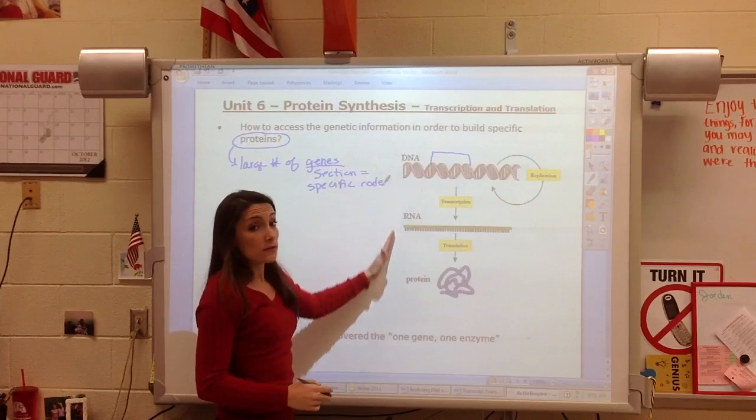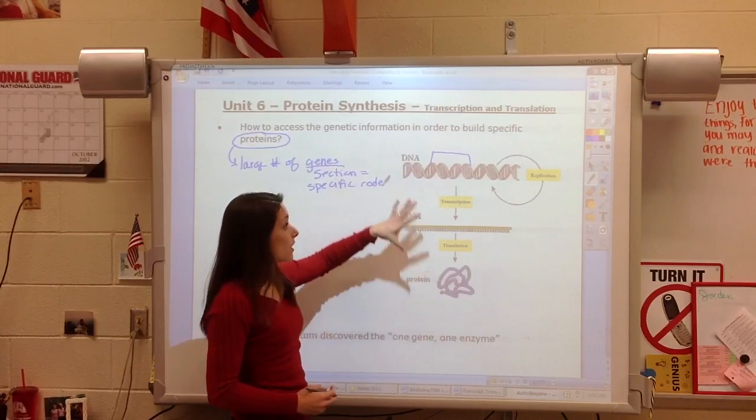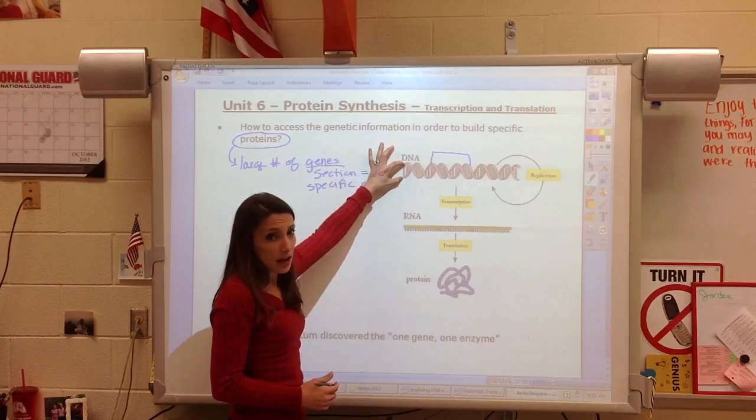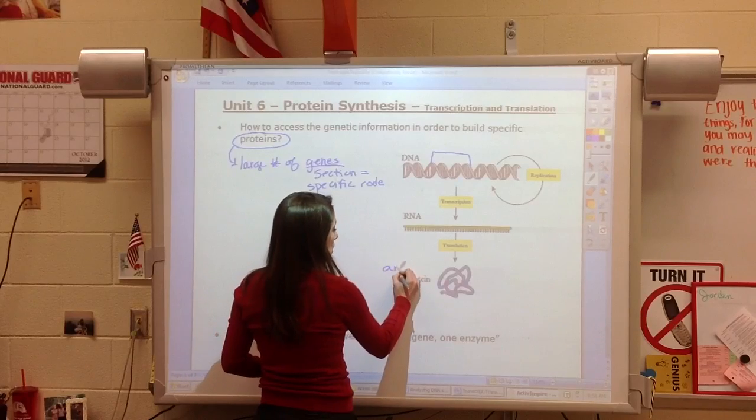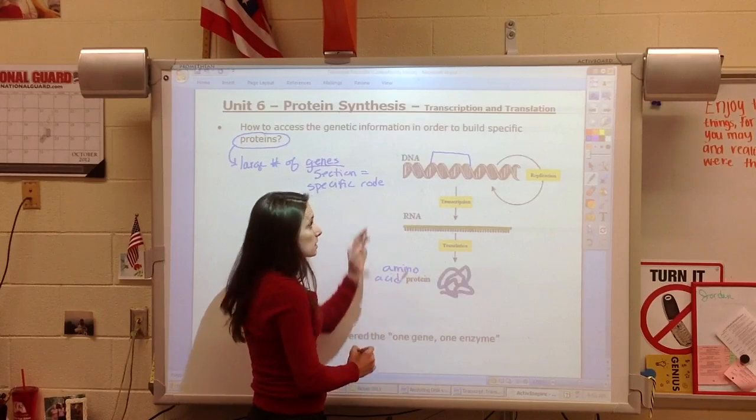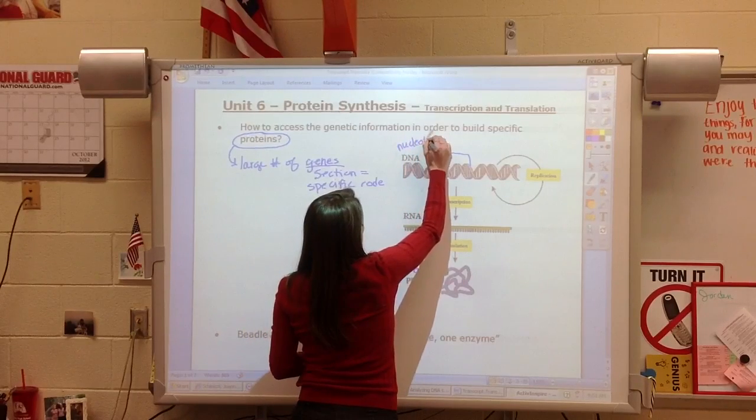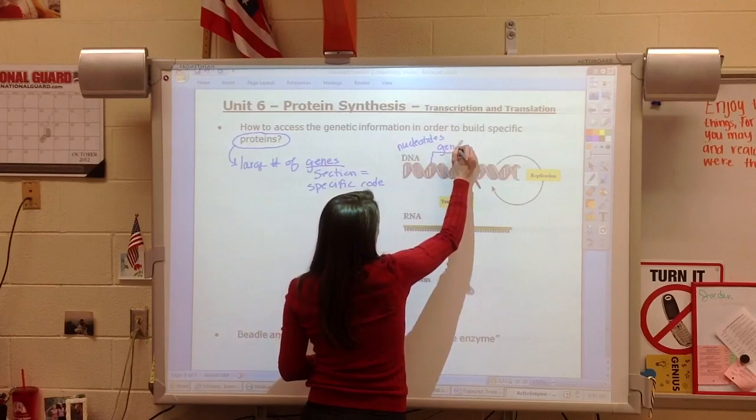There's going to be a very large number of steps between the nucleotide code of DNA and the amino acid sequence of a protein. So that is one of the big things that we need to keep in mind, is that DNA has the code in nucleotides, and these codes are broken up into sections called genes.